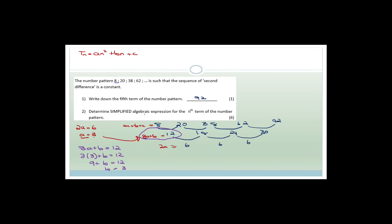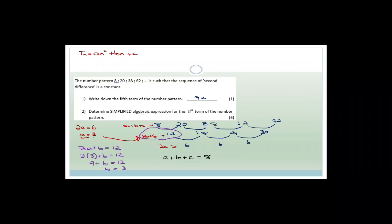We were busy determining the simplified algebraic expression for the nth term with the second difference pattern. We have the sequence 8, 20, 38, 62, and the next number is 92. Our second difference was 6, from which we worked out that a = 3. We substituted that into 3a + b = 12 to get b = 3. Now for the last step: a + b + c = 8, so 3 + 3 + c = 8, therefore c = 2. So our Tn = 3n² + 3n + 2.